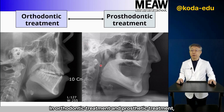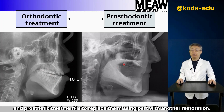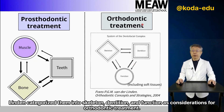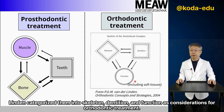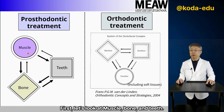In orthodontic treatment and prosthetic treatment, orthodontic treatment is to arrange the teeth you have, and prosthetic treatment is to replace the missing part with another restoration. Linden categorized them into skeleton, dentition, and function as considerations for orthodontic treatment. However, prosthetics doctors mainly focus on muscles, bone, and teeth. First, let's look at muscle, bone, and teeth.